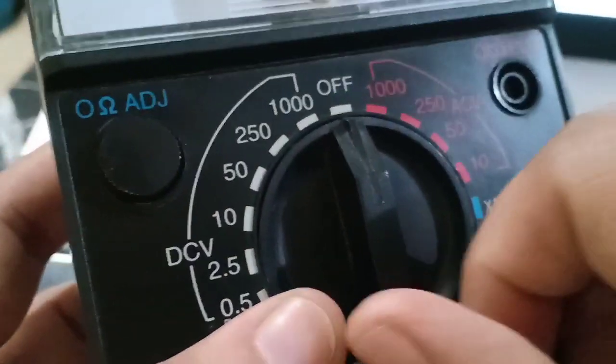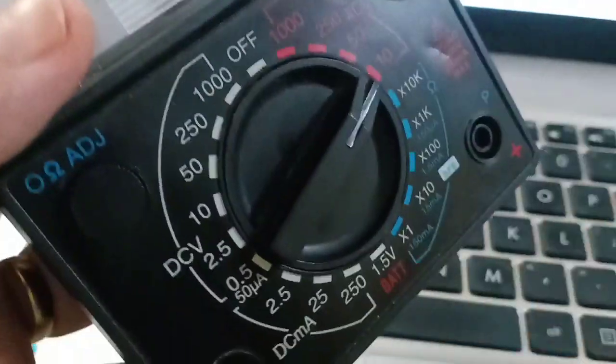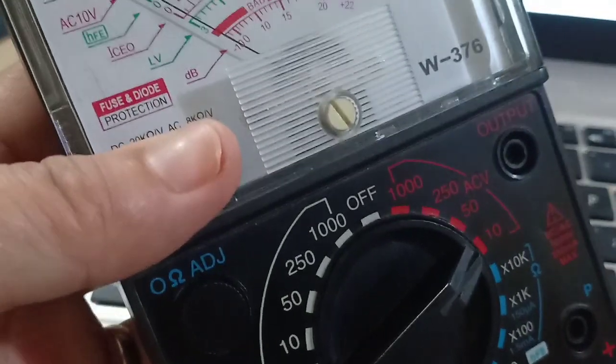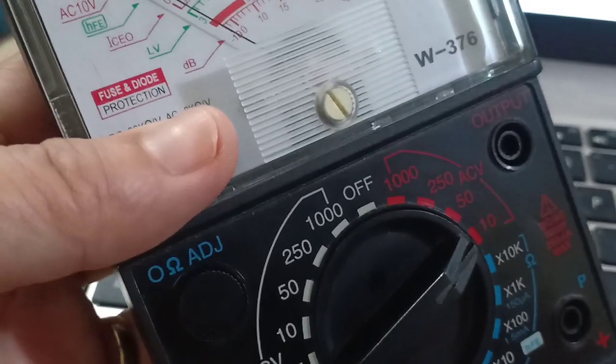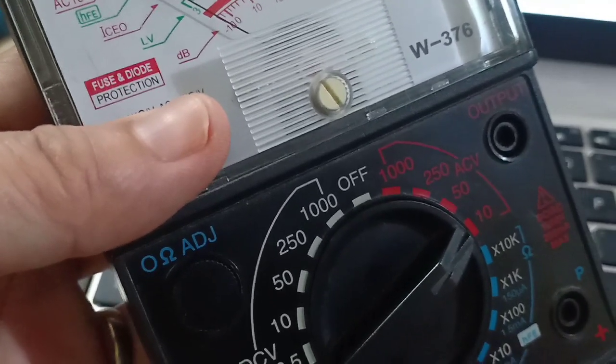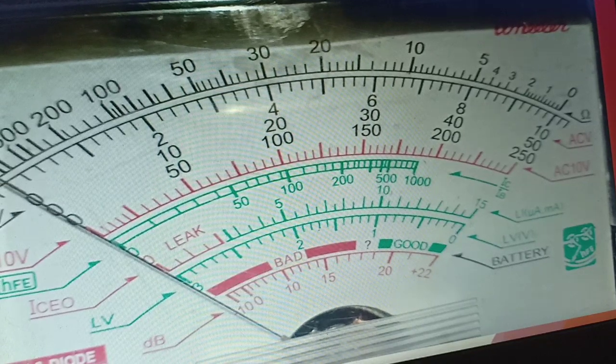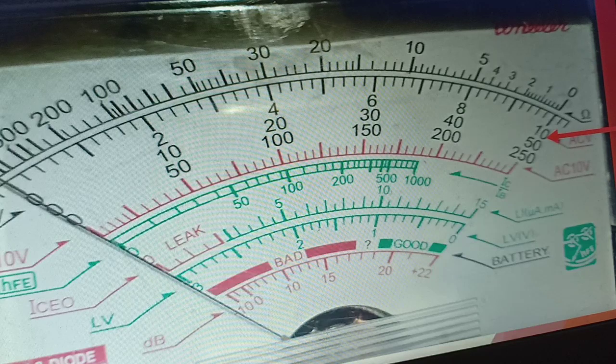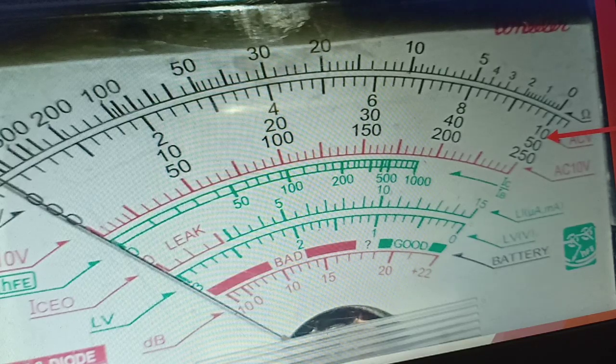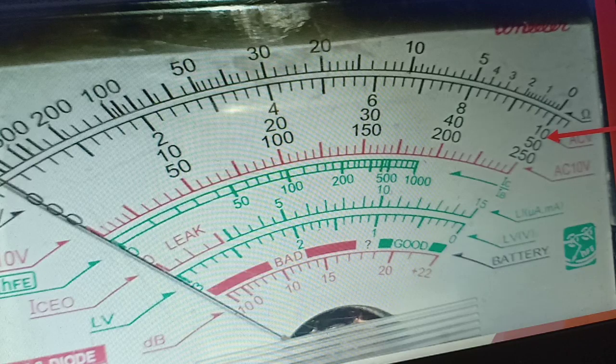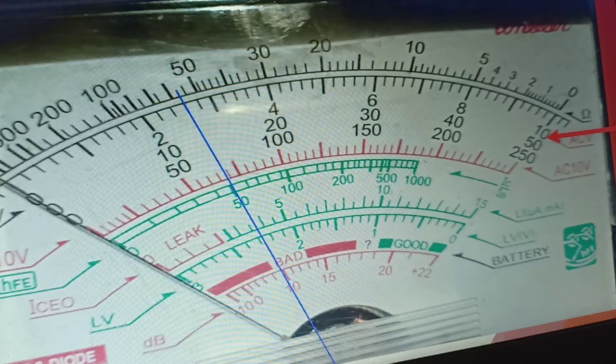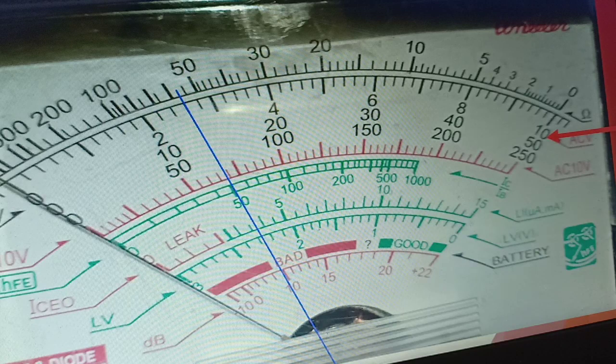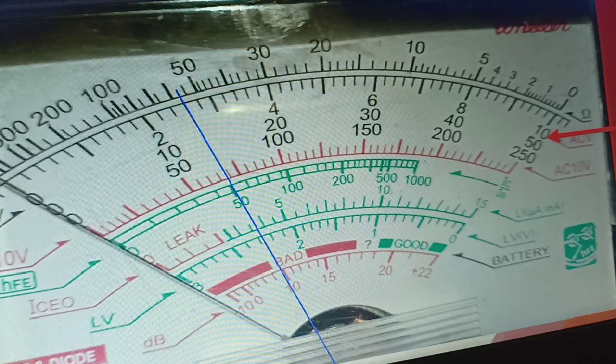For example, we are going to switch this into 10V. So how are we going to read using the setting 10V? In here, the setting is 10. Now, how are we going to read that if the needle points here? Let's see first, how do we read each graduation or each deflection?